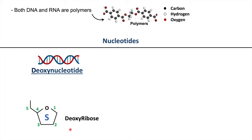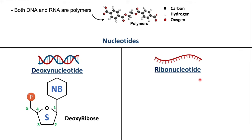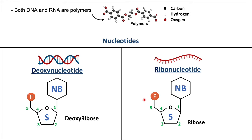The nucleotide which makes up DNA is called a deoxynucleotide, which contains a deoxyribose sugar molecule — a pentose, or five-carbon, ring. It also contains a nitrogenous base attached to the carbon-1 position of the pentose ring, and a phosphate group attached to the carbon-5 position. The nucleotide which makes up RNA is called a ribonucleotide, and it contains a ribose sugar — again a pentose ring — with a nitrogenous base at carbon-1 and a phosphate group at carbon-5.